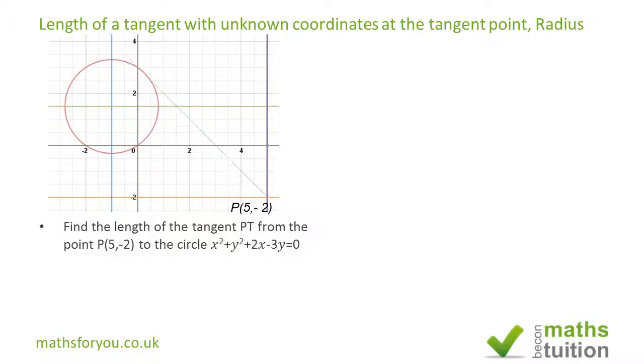The tangent meets the circle at point T. What I've done here is rewrite this equation in the format x² + y² + 2(1)x + 2(-3/2)y. If you examine carefully, this is the same as the original equation. I've done this because I want to write it in the general format for the equation of a circle.